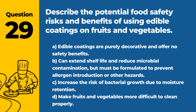Question 29. Describe the potential food safety risks and benefits of using edible coatings on fruits and vegetables. a. Edible coatings are purely decorative and offer no safety benefits. b. Can extend shelf life and reduce microbial contamination, but must be formulated to prevent allergen introduction or other hazards. c. Increase the risk of bacterial growth due to moisture retention. d. Make fruits and vegetables more difficult to clean properly. Answer: b. Can extend shelf life and reduce microbial contamination, but must be formulated to prevent allergen introduction or other hazards. Edible coatings represent an innovative approach to enhancing food safety and quality.